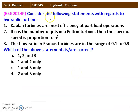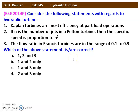The next question from the 2014 question paper — consider the following statements regarding hydraulic turbines. Statement 1: Kaplan turbines are most efficient at part load operation. Statement 2: if n is the number of jets in the Pelton turbine, then specific speed is proportional to n². Statement 3: the flow ratio of the Francis turbine is in the range of 0.1 to 0.3. Statements 1 and 3 are correct; statement 2 is not correct, as specific speed is not proportional to the number of jets.